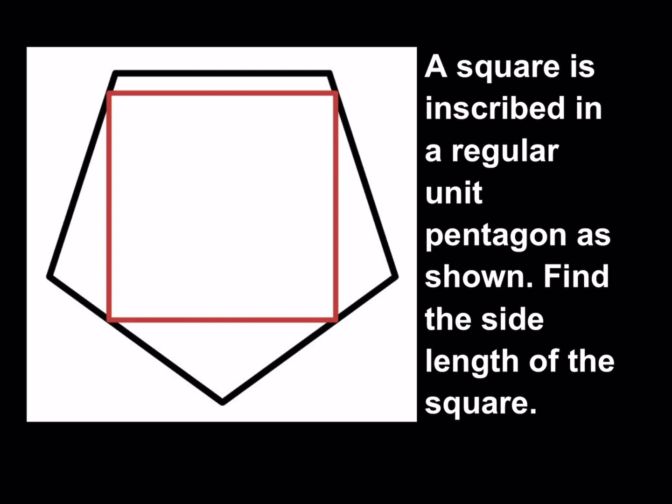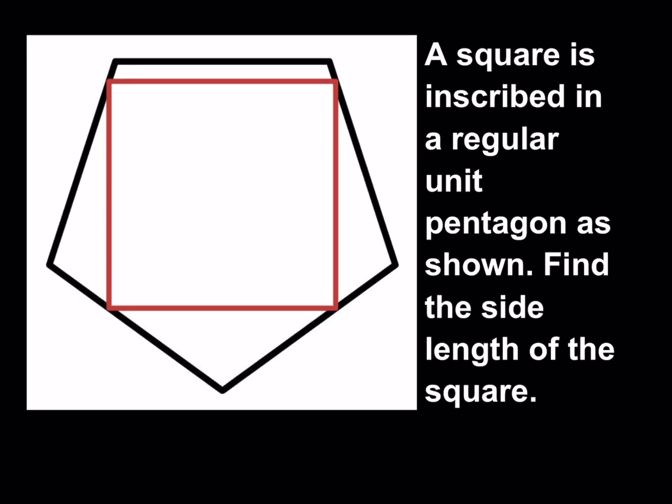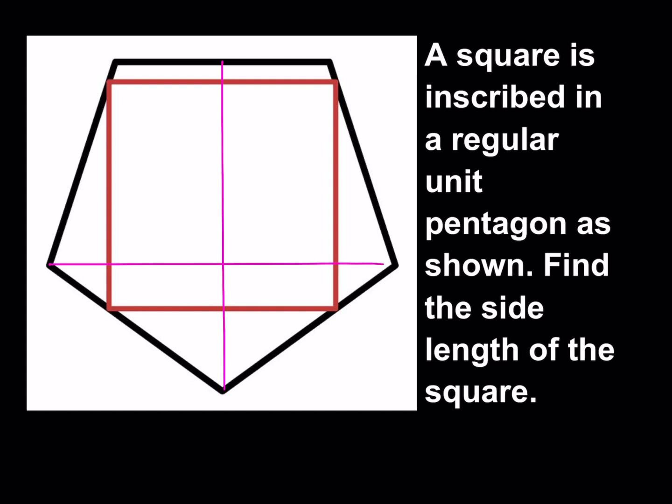So what am I going to do? I'll be making some connections. Let's go ahead and drop this perpendicular line here all the way down like this. And then I'm going to make another connection — a horizontal line here. That's pretty much what we need; we only need two connections here.